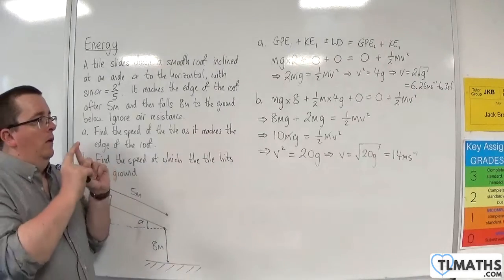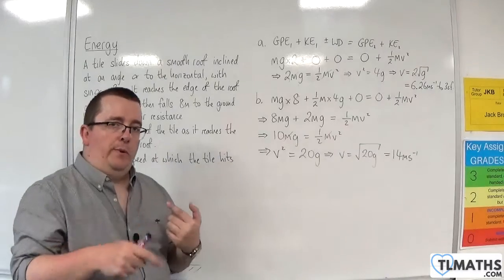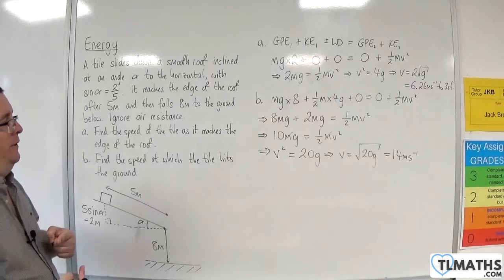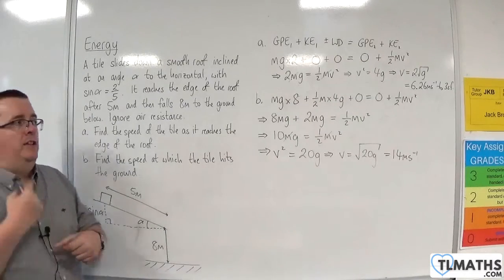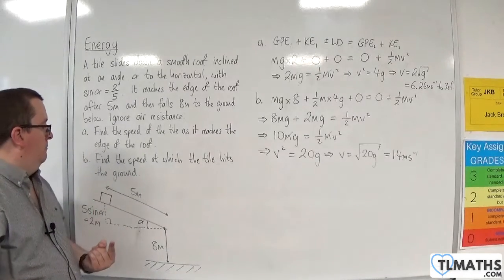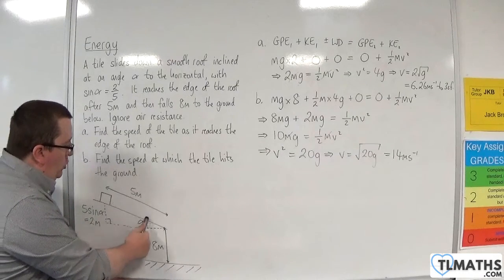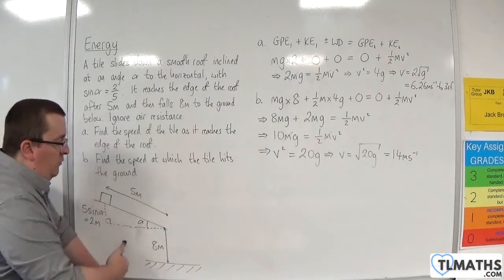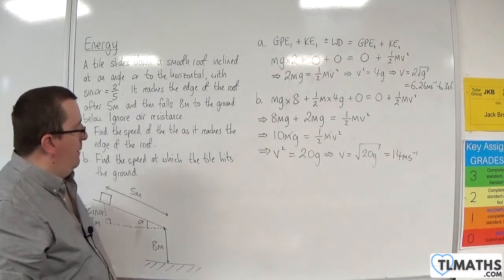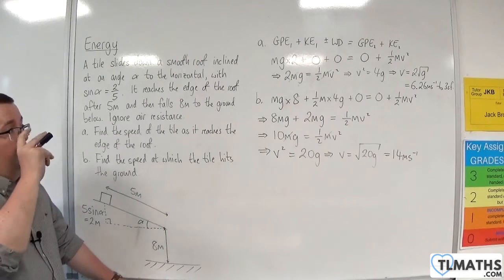Now, the point of this problem is that it's important to note that if you weren't doing this by using energy methods, you might think, well, could I do this using A-level maths techniques? And assuming constant acceleration, yes, you could. The only problem is that your acceleration down the slope here is going to be different to the acceleration once it leaves the slope, once it leaves the roof. And so your problem becomes a little bit more complicated because you've got to divide it up into two situations.